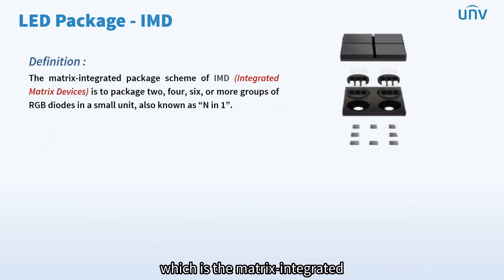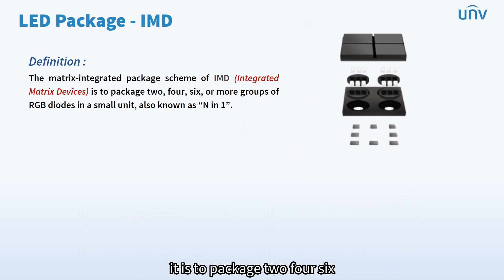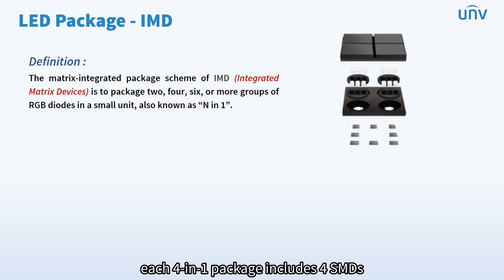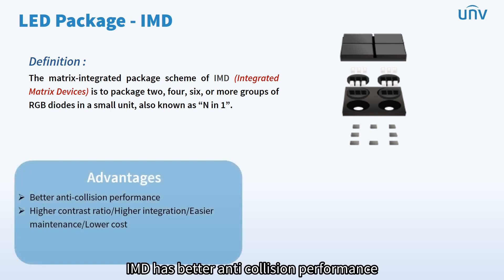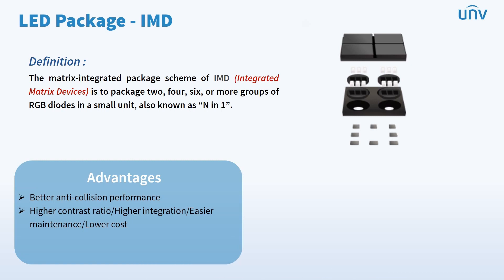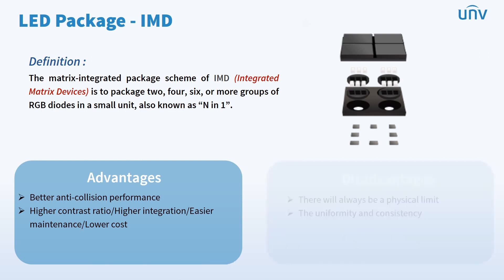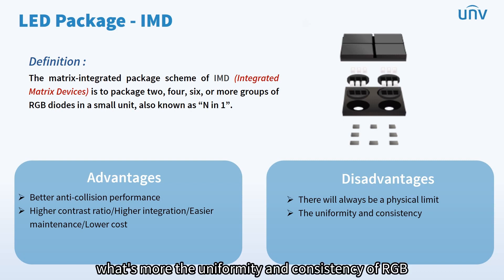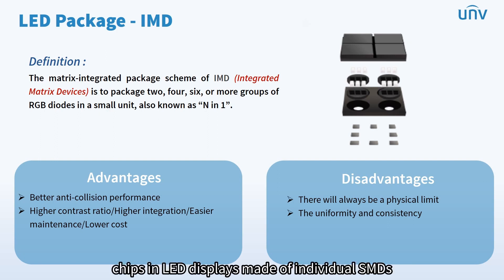The next is IMD, which is the Matrix Integrated Package Scheme of integrated matrix devices — an upgrade from SMD. It packages two, four, six, or more groups of RGB diodes in a small unit, also known as N-in-one. A typical IMD model is produced in the form of two-by-two, or four-in-one. Each four-in-one package includes four SMDs, and each SMD includes three chips: red, green, and blue. Compared with traditional SMD, IMD has better anti-collision performance and higher SMT efficiency, and features higher contrast, higher integration, easier maintenance, and lower cost, making it an excellent product for finer pitches. Moreover, as the pixel pitch continues to narrow, IMD will face the same problem as SMD, and there will be limited room for the growth of IMD products. The uniformity and consistency of RGB chips in each package may not be as high as that of RGB chips in LED displays made of individual SMDs.